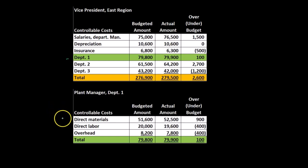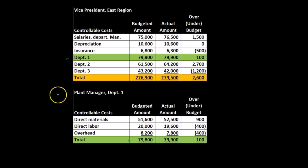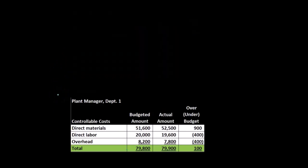Here's the plant manager level, where we now have the detail of department one. They have the direct materials, the direct labor, the overhead, and the totals here. So the more detailed report is on the lower level and then it's summarized up at the higher level.